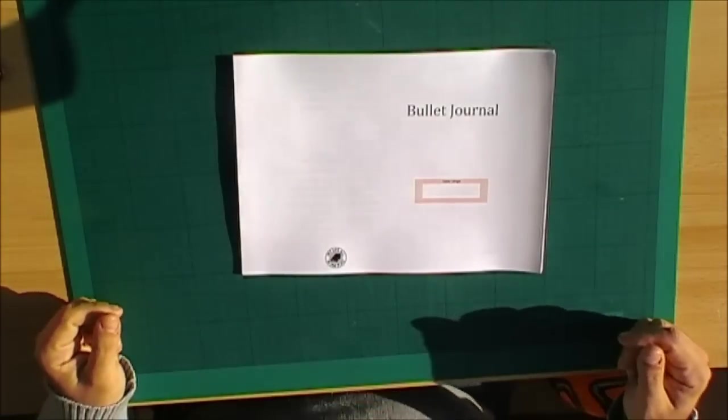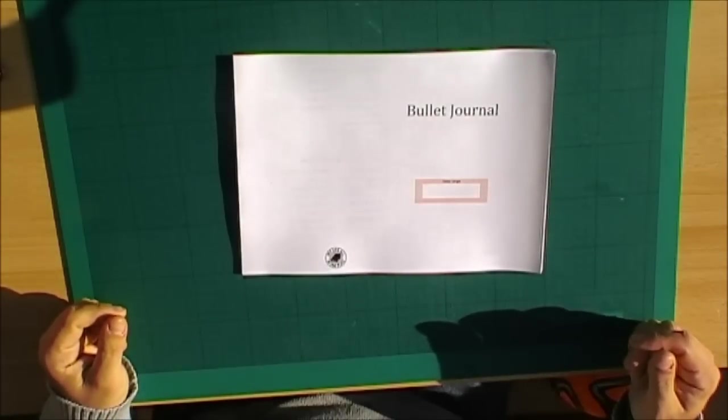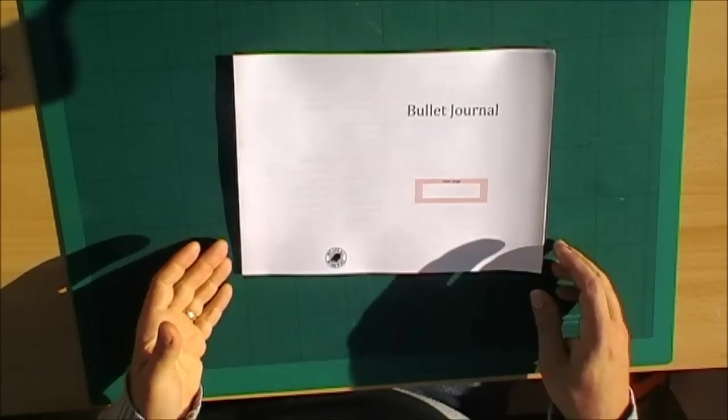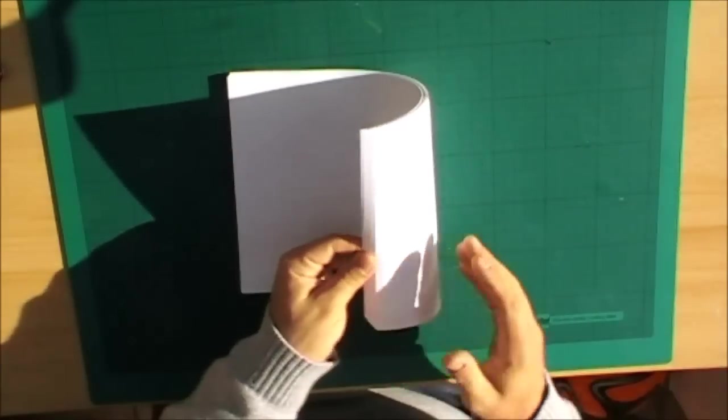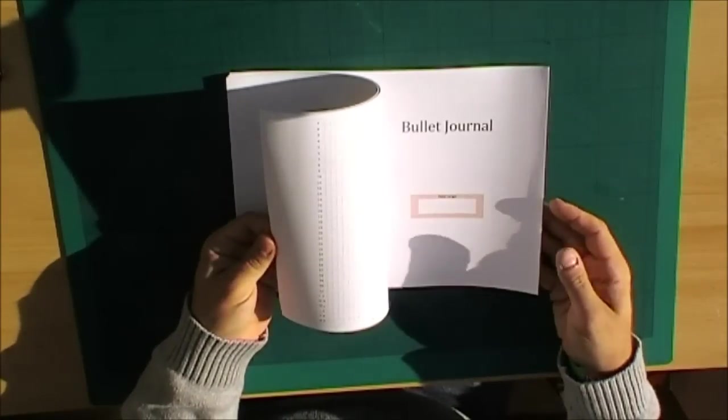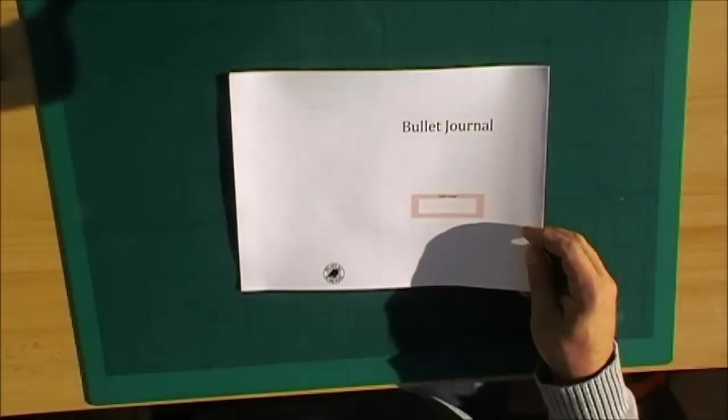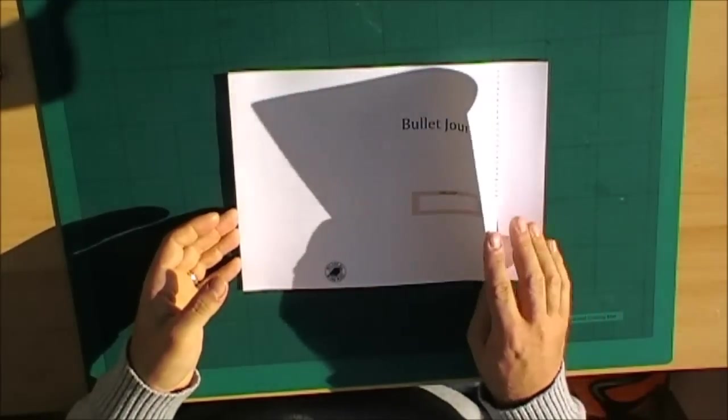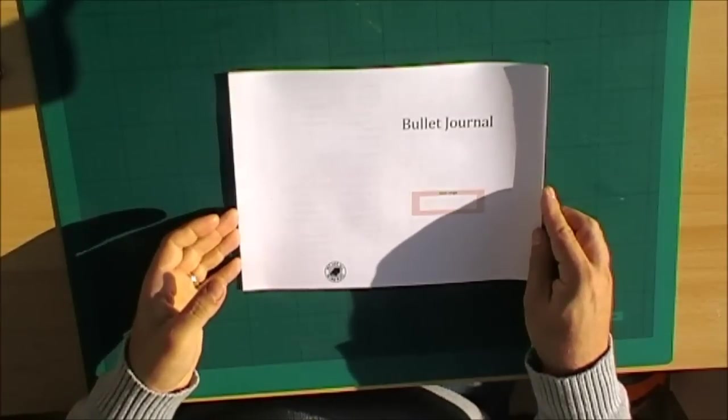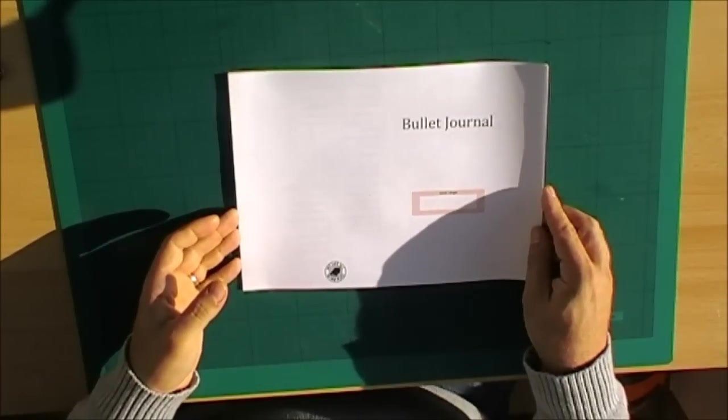We're going to make some booklets for the Midori traveler's notebook. I've got here, which I've printed off from my site, the basic template for a bullet journal. In fact, I've got a couple. We're going to be making two of these today because I'm going to show you two different methods of binding it.